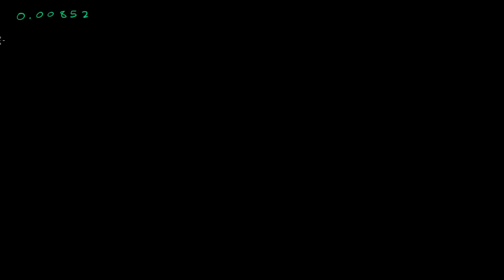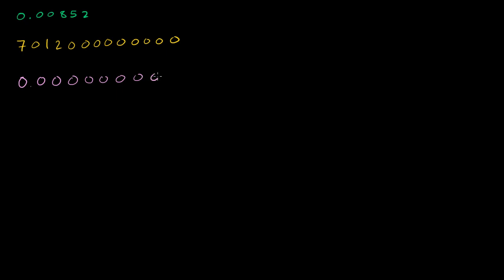Let me just write down a bunch of numbers. The first number is 0.00852. The second number is 7,012 followed by many zeros — I'm just arbitrarily stopping the zeros. The next number is 0.000000000000005 — I'll draw a couple more zeros.